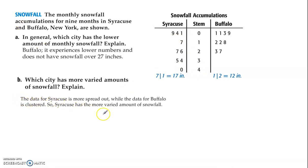So the way they describe it, say the data for Syracuse is more spread out, while for Buffalo, it's more clustered. So because we can see this is spread out, therefore, it has a more varied amount of snowfall. That's interpreting a stem and leaf plot or even a back-to-back stem and leaf plot.